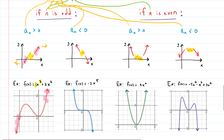Example 2: −2x⁵. The highest power, 5, is still odd, but the leading coefficient is −2, which is negative. The test says the function should fall to the right and rise to the left — and indeed that is what happens.